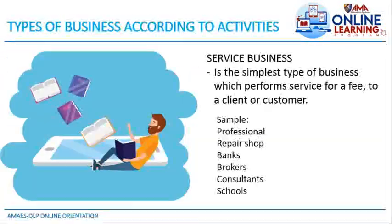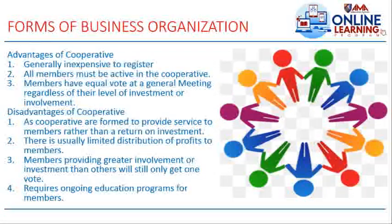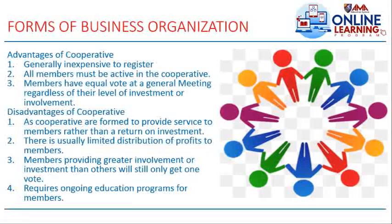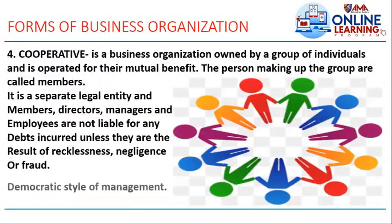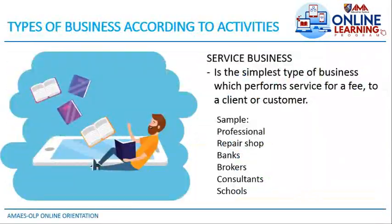In summary, the four forms of business organization are: sole proprietorship, owned by one person; partnership, owned by two or more; corporation, a legal entity; and cooperative, a business organization owned by a group of individuals. Let us now proceed with the types of business according to activities.